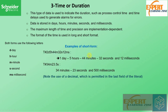This is an example of a short form. For example, 1 day, 5 hours, 4 minutes, 3 seconds, 12 milliseconds can be written as G#1D5H4M3S12MS.